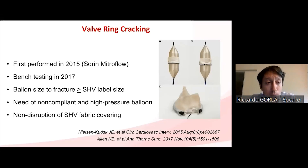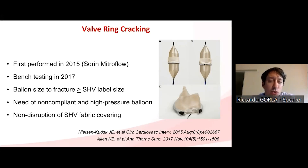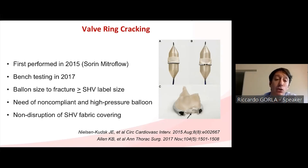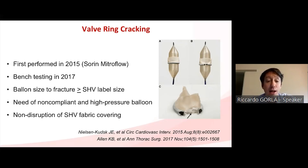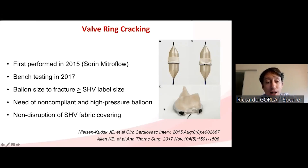In cases of high residual gradient despite a good implant, the option is valve ring fracture. This technique was first performed in 2015 on a Mitraflow, with main bench testing in 2017. You must use a non-compliant balloon with a size greater than the surgical valve label size, and the balloon must be non-compliant in order to distribute force homogeneously. A high-pressure balloon should be used, and it has been shown that the external fabric covering on the surgical valve is not disrupted by valve ring fracture.